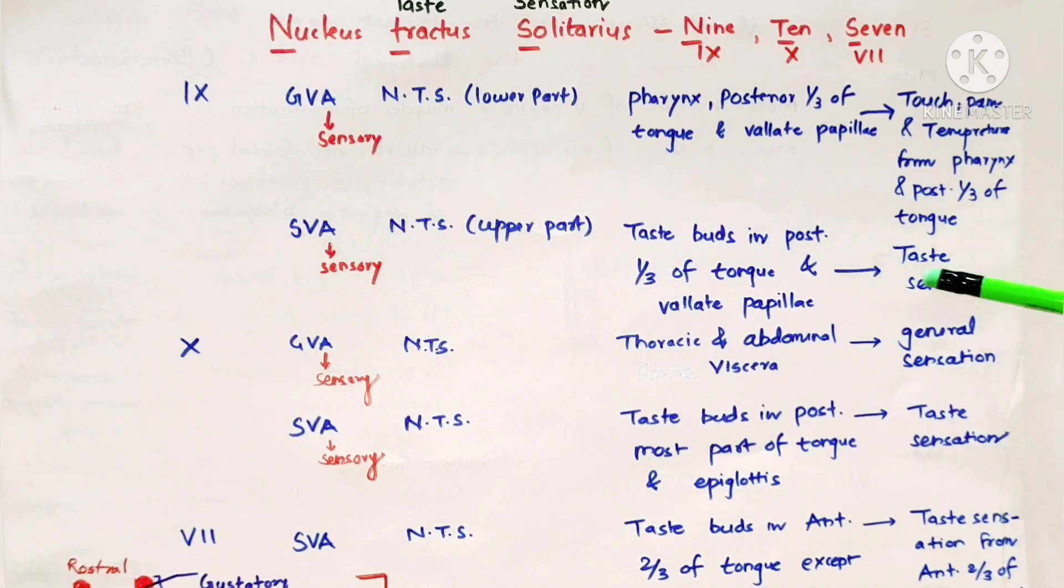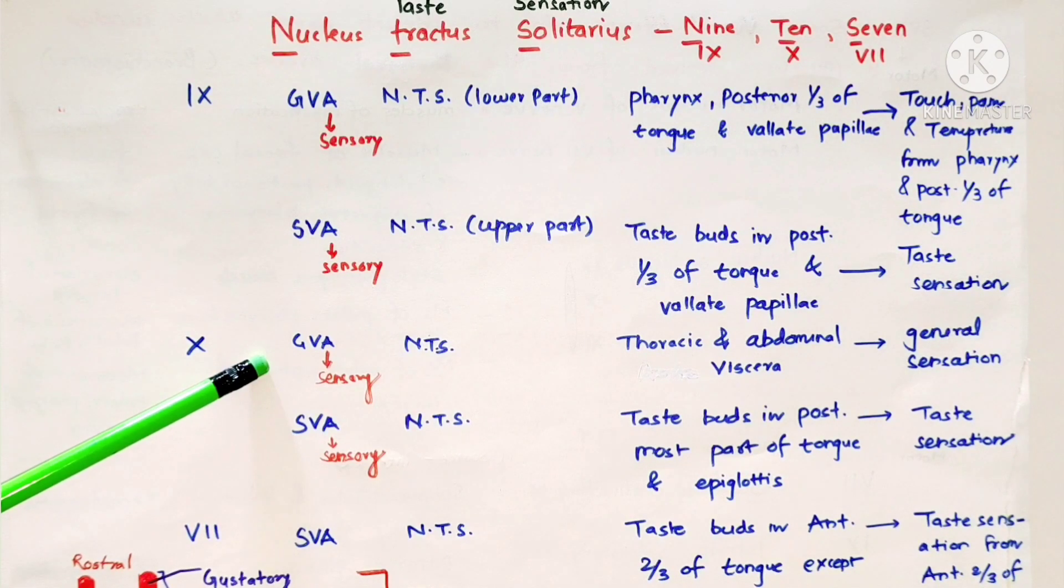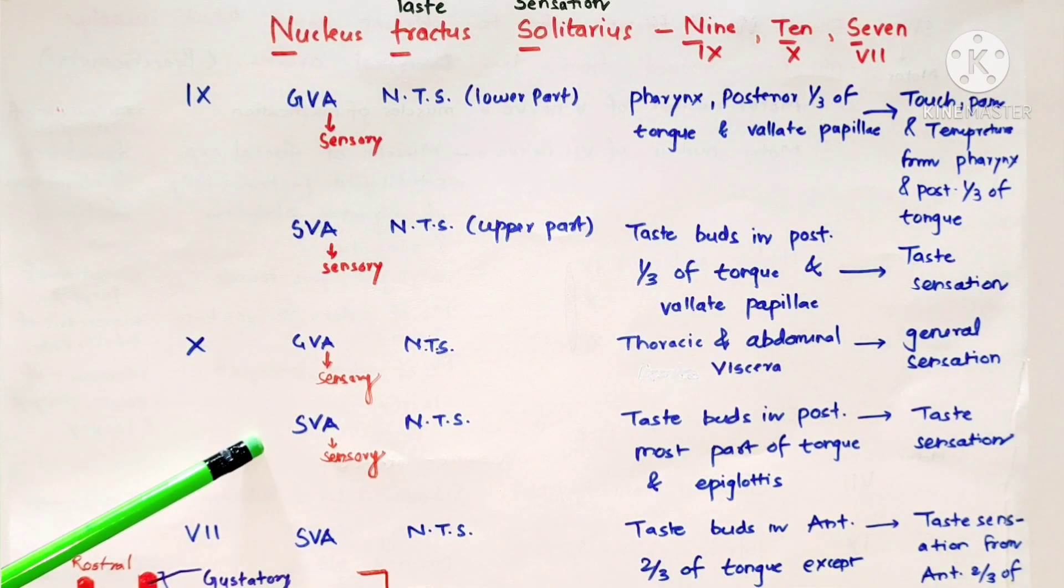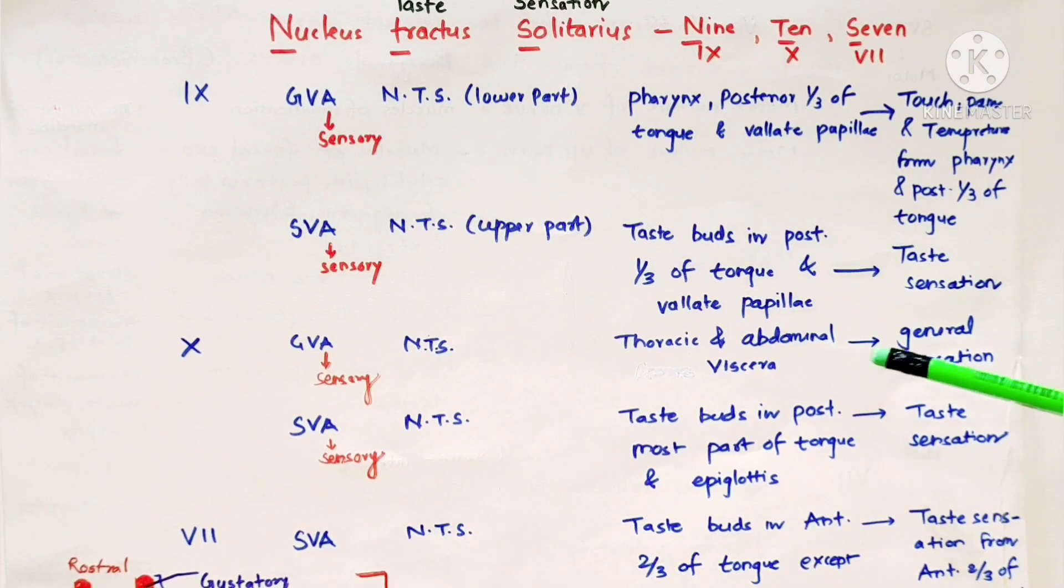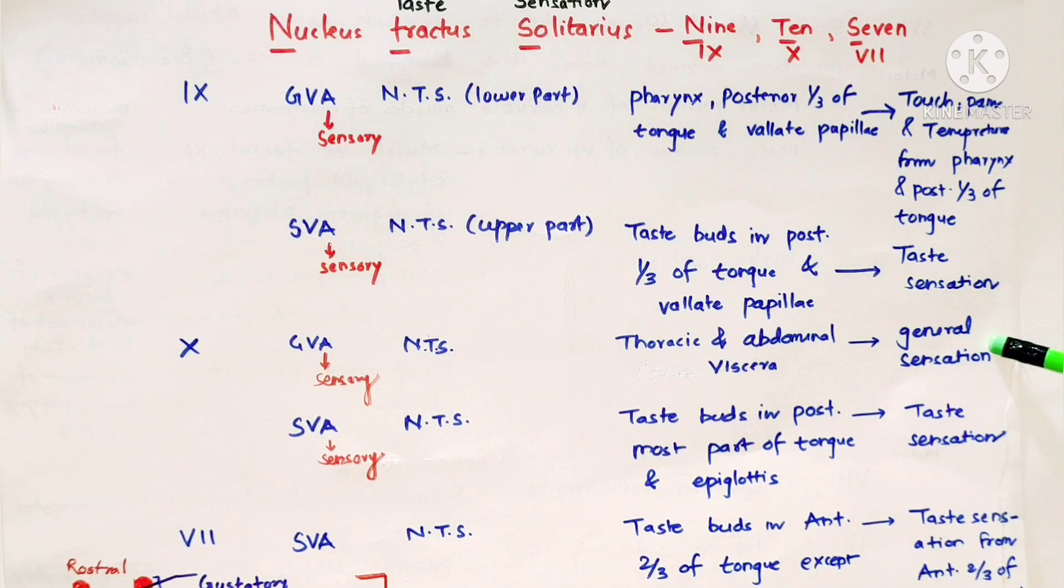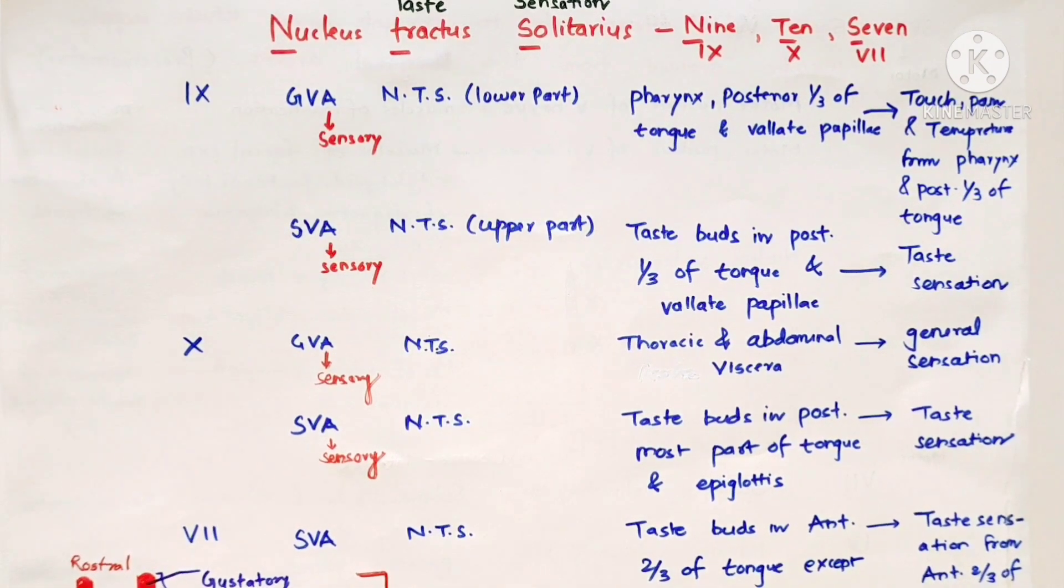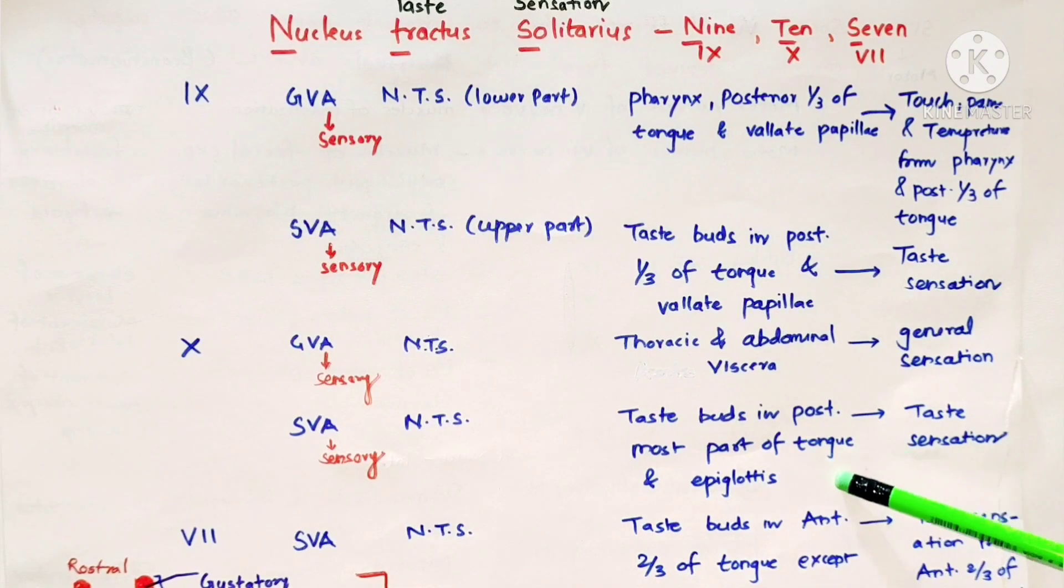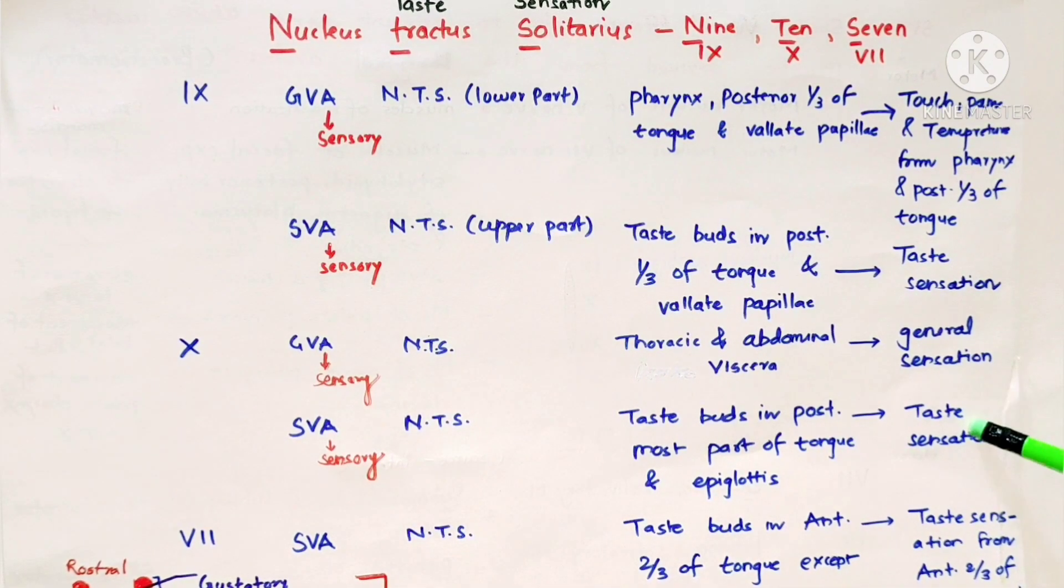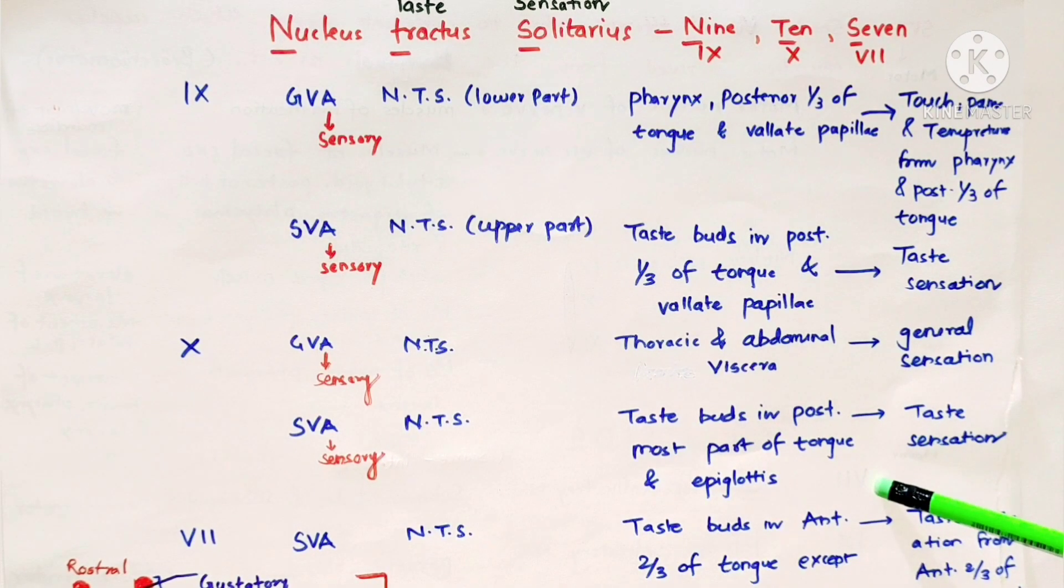Functional component of ninth nerve is general visceral afferent and special visceral afferent. General visceral afferent fibers are distributed along pharynx, posterior one-third of tongue, and vallate papillae. Functions include touch, pain, and temperature from pharynx and posterior one-third of tongue. Special visceral afferent is involved in taste sensation.